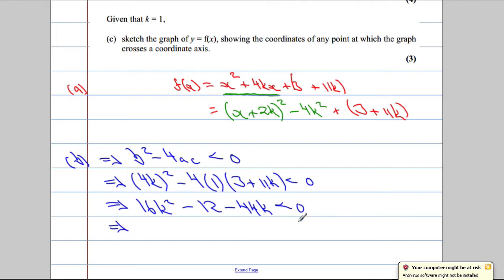Let's just tidy up a little bit. 4k to be squared is going to give us 16k squared. And then when we expand this out, we're going to get negative 12, subtract 44k. And that's going to be less than 0. And now, if this is less than 0, everything is divisible by 4. So what I'm going to do is divide everything by 4.